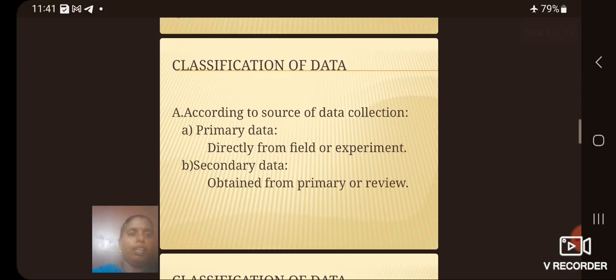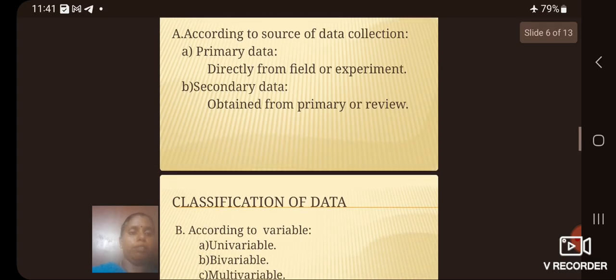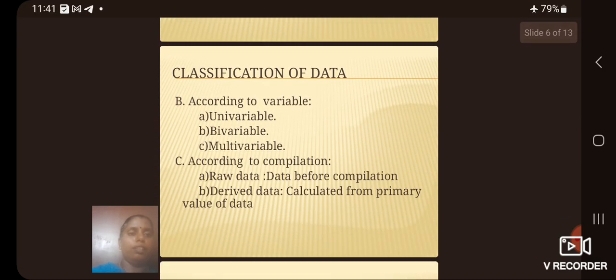Then next we see the classification of data. According to source of data collection, it can be divided into primary data and secondary data. Primary data directly from field or experiment. Secondary data obtained from primary or review.